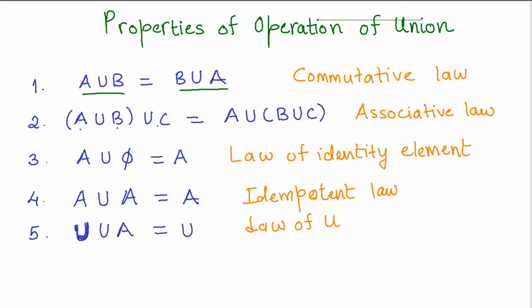So when you do this union operation by combining A union B first and then combining the resultant set with C, and if you were to do this a different way — that is, combining B union C first and then doing A union with that result — you would still end up with the same set. That is the associative law.